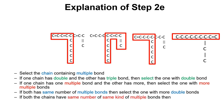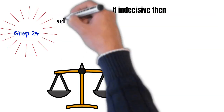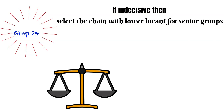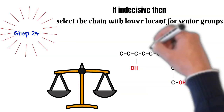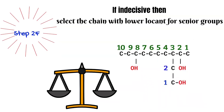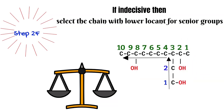If both chains have the same number and kind of multiple bonds, number both chains and select the one that has the lower locant for unsaturation. For example, in this compound there are two chains with equal length and both have one double bond — select the chain where the multiple bond gets the lower locant. If still indecisive, select the chain with the lower locant for the senior group.